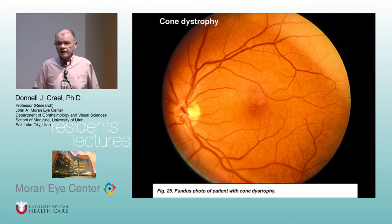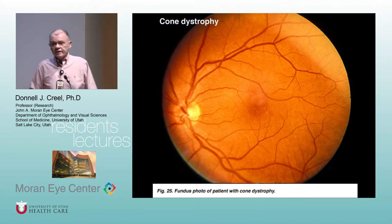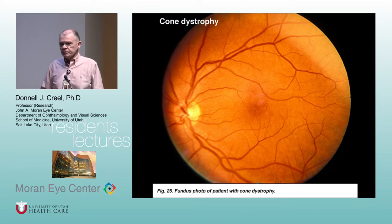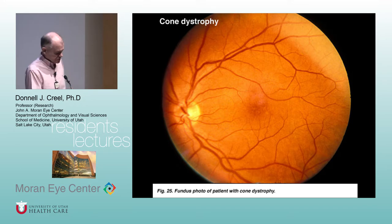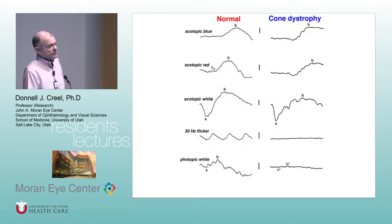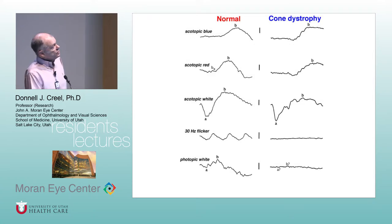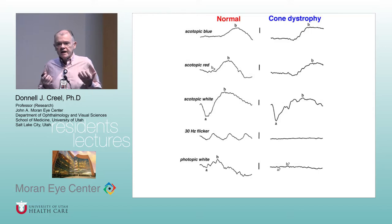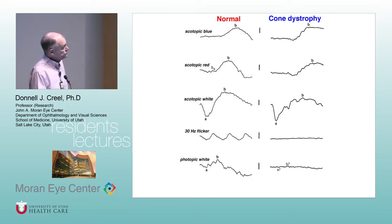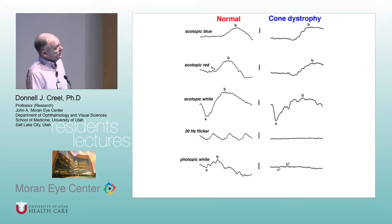Most cone dystrophy fundi are unremarkable — you can't count on fundus appearance to help much with cone dystrophy diagnosis. Here's a cone dystrophy, just the opposite of retinitis pigmentosa. B wave responses in the dark are good but slower — because if you pull the cones out, it's going to make the time to these peaks slower. The top half are normal except the BX wave isn't there. In the classic case, you get no 30 hertz flicker and no response to a single flash of white light in the light.